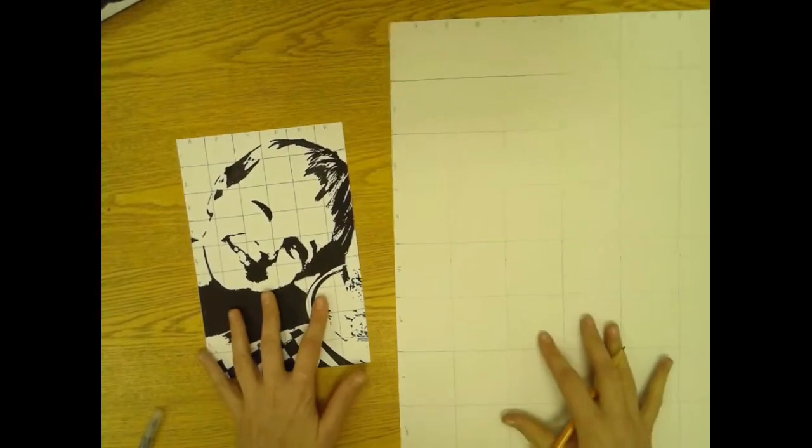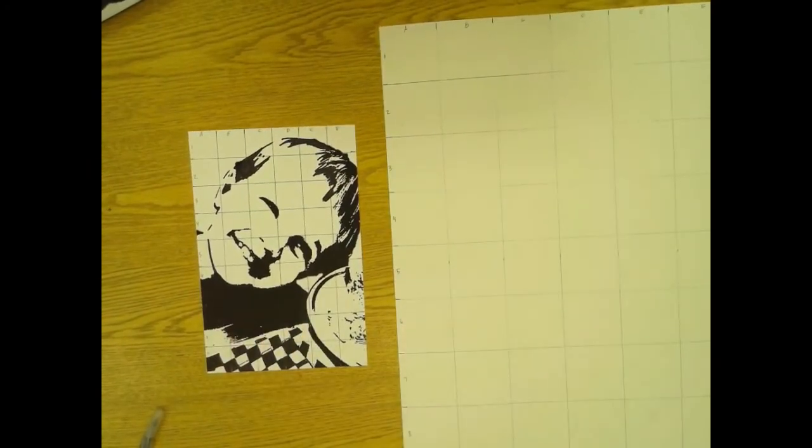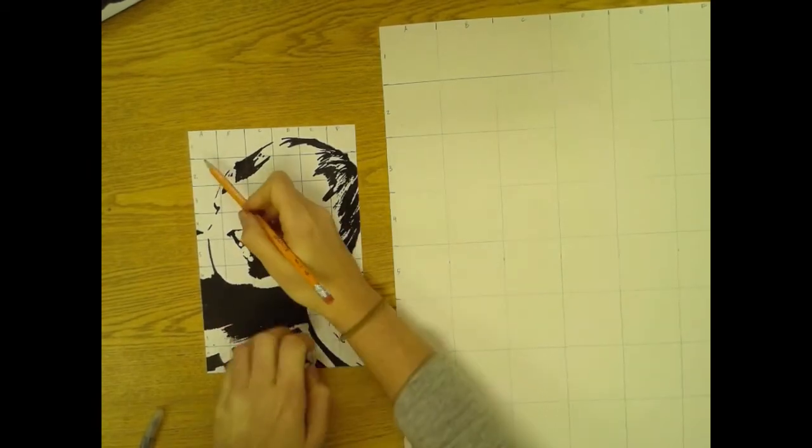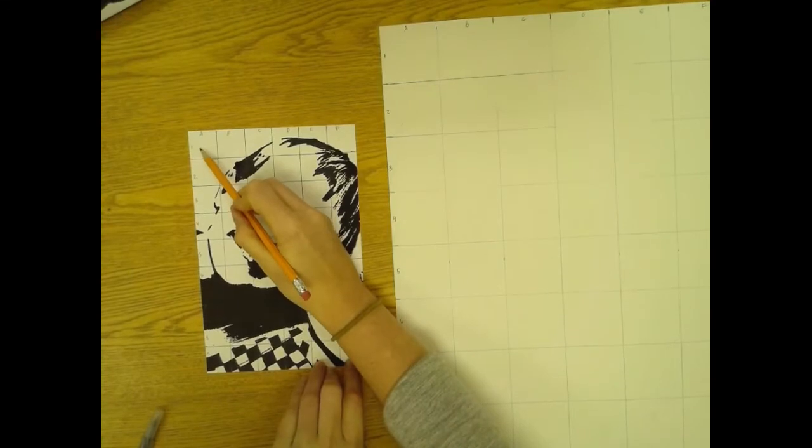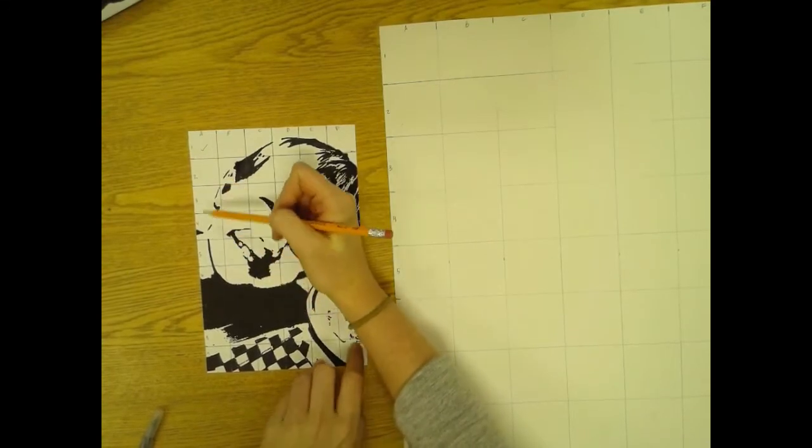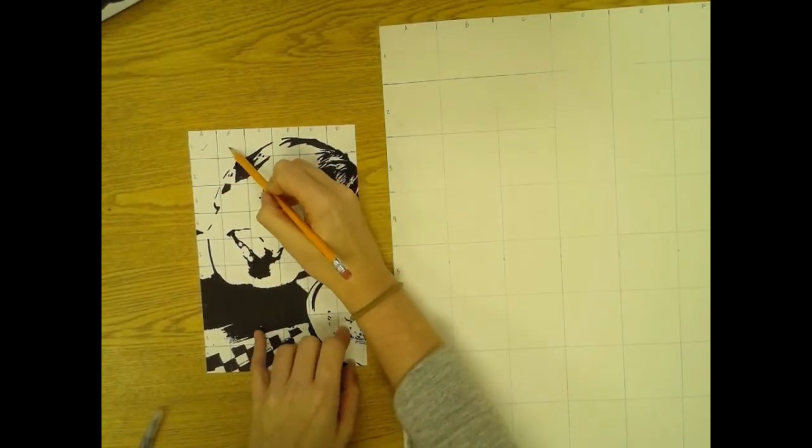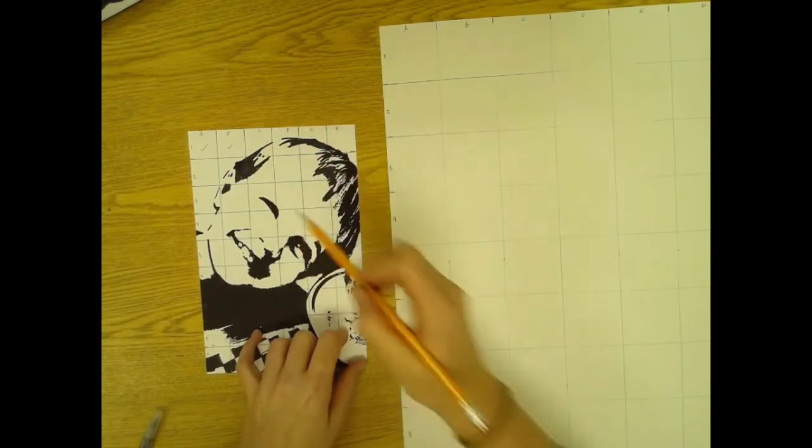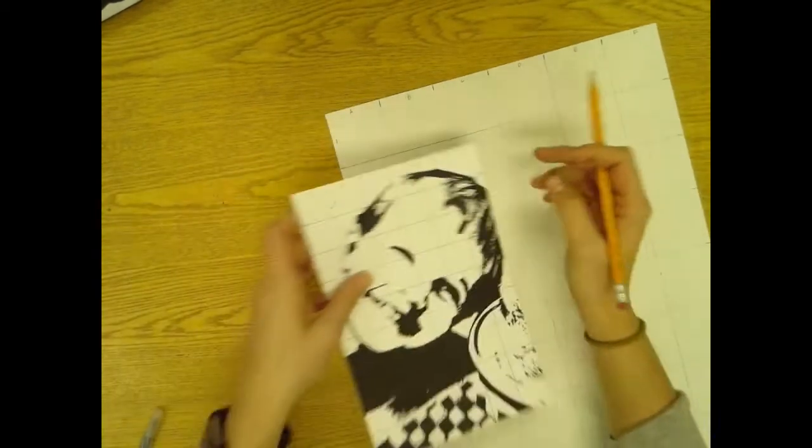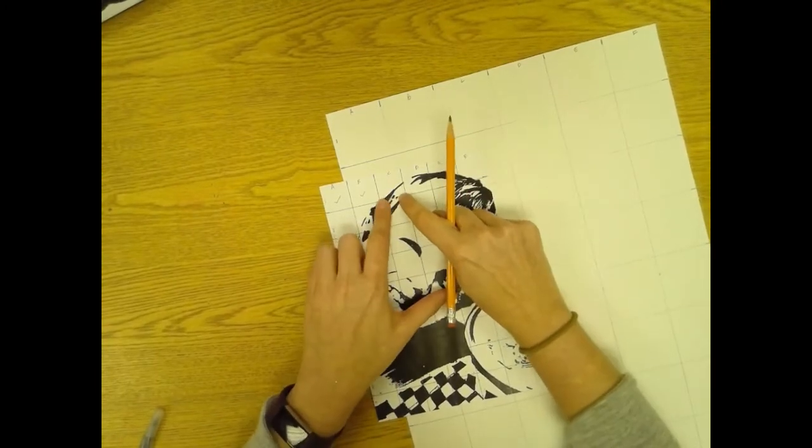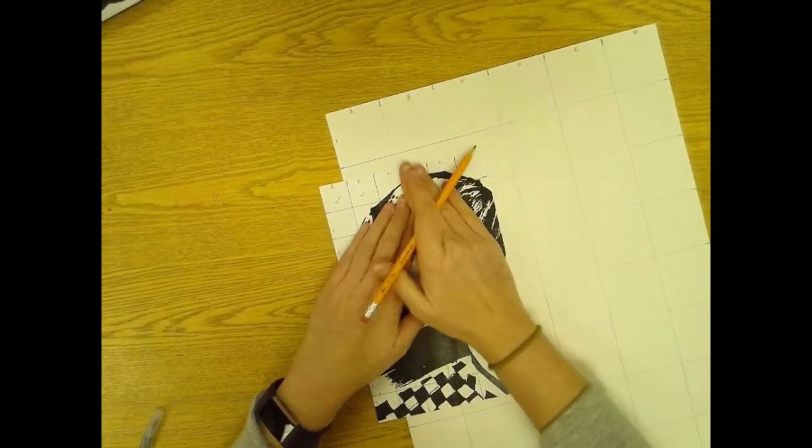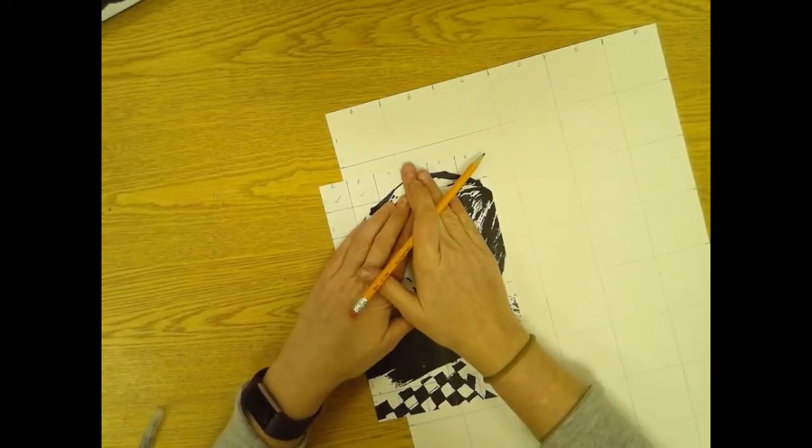Now that my boxes are numbered and both grids are drawn, I can start drawing what is in each square. So I know that in A1 I don't have anything, I can check that one off. There's nothing in B1, so I can check that one off. When I get to C1, there's something to draw. I'm just focusing on that square. If it helps you can even cover it up and just look at what you see there.